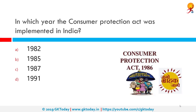In which year was the Consumer Protection Act implemented in India? The correct answer is 1987. The Consumer Protection Act 1986 is an act of the Parliament of India enacted in 1986 and implemented in 1987 to protect the interest of consumers in India. It makes provision for the establishment of consumer councils and other authorities for the settlement of consumer disputes.